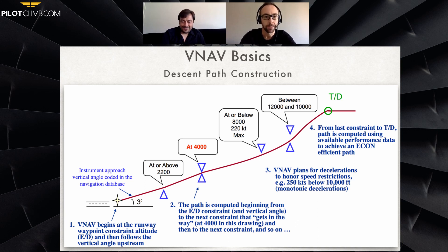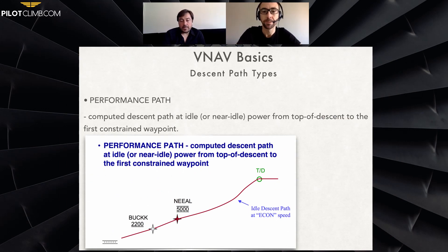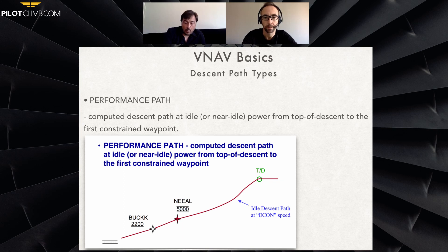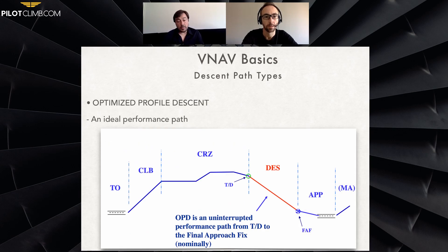The performance path is a computed descent path at idle or near-idle power from the top of descent to the first controlling waypoint. If there are no constraints it's going to be an econ descent, idle all the way down, at a calculated glide path of about three degrees. From the top of descent to the first constraint it's an idle descent path.